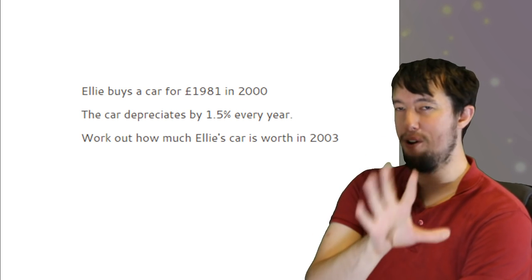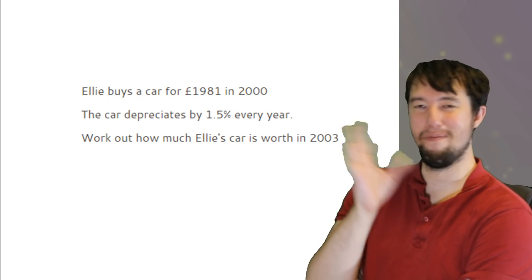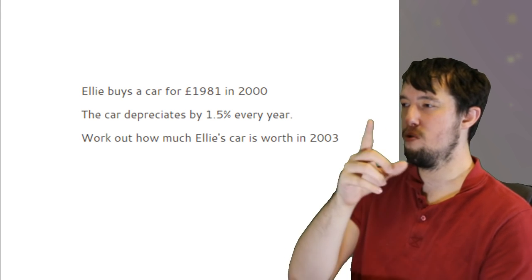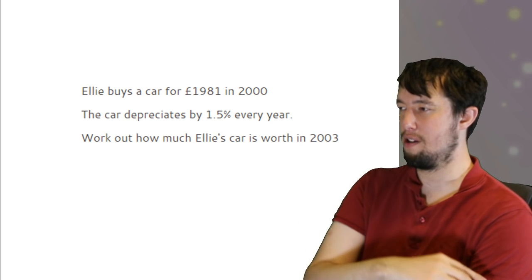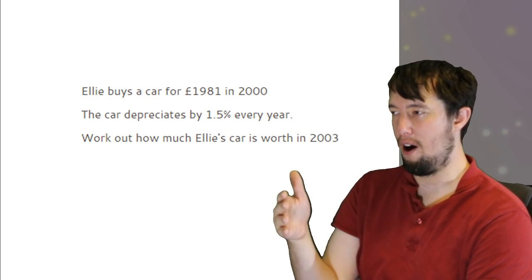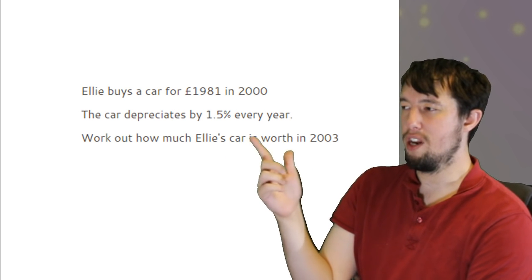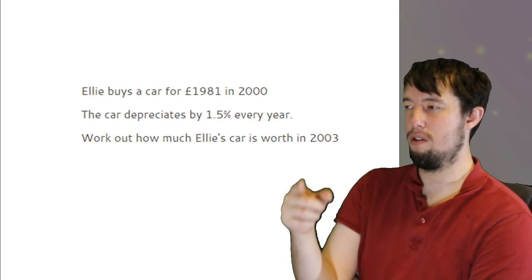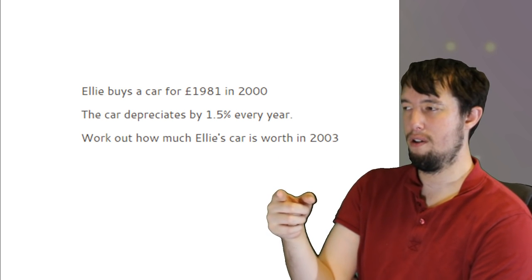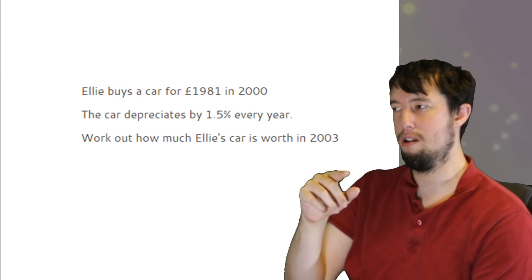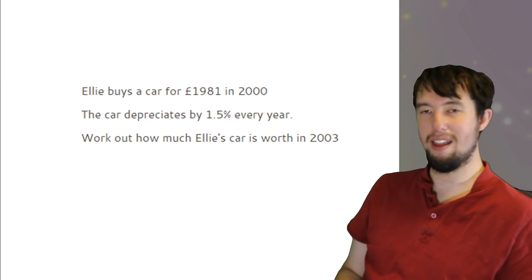If it depreciates by 1.5%, you always start off with 100%, take away the 1.5%, and you get 98.5%. And as a multiplier, you divide it by 100, which is 0.985. I'm very tired, it's quite late, so if I'm saying completely random gibberish numbers, then please forgive me. And then you just times the 2000 price by 0.985 for every year until 2003, so 2001, then 2002, then 2003, or times it by 0.985 to the power of 3 if it's 3 years.